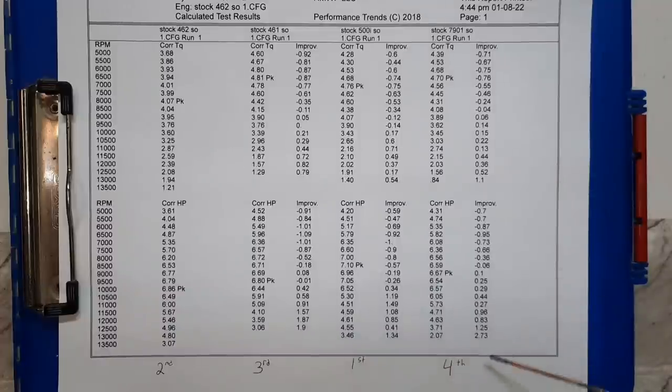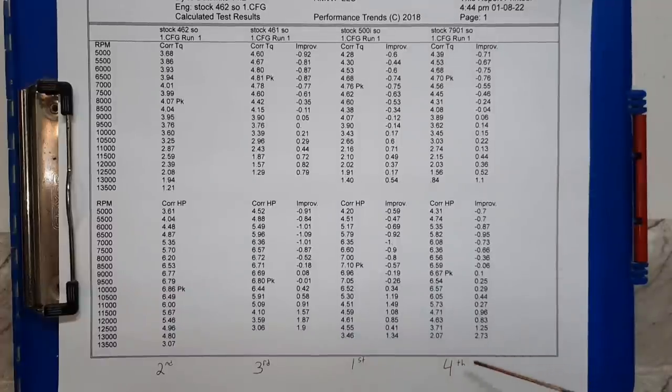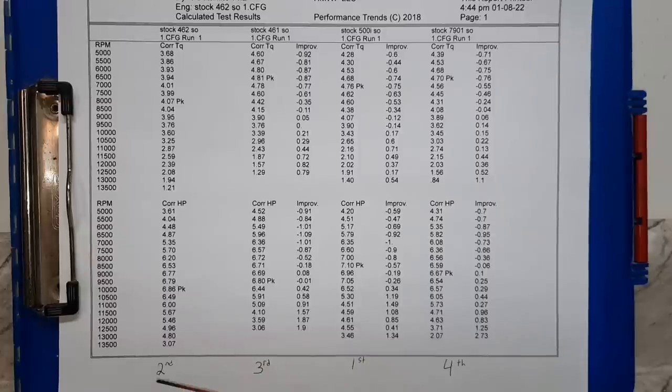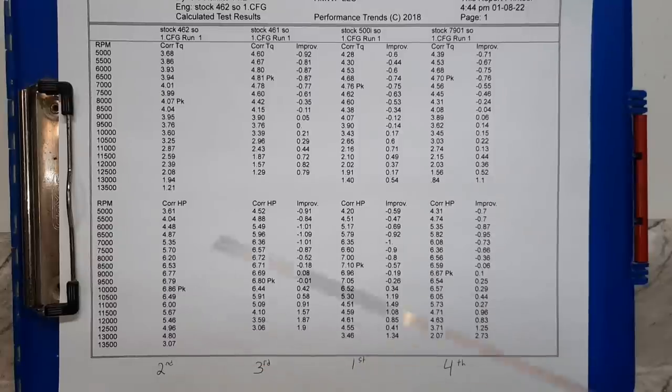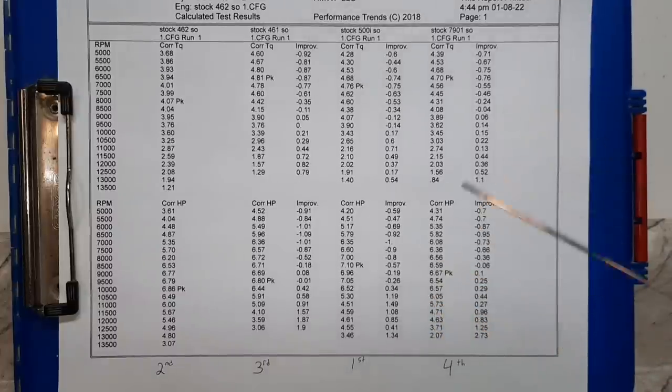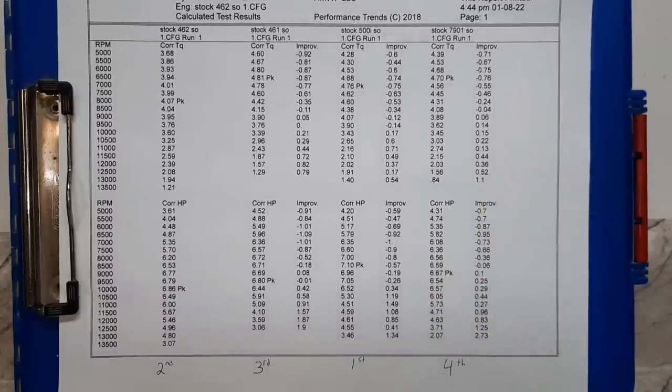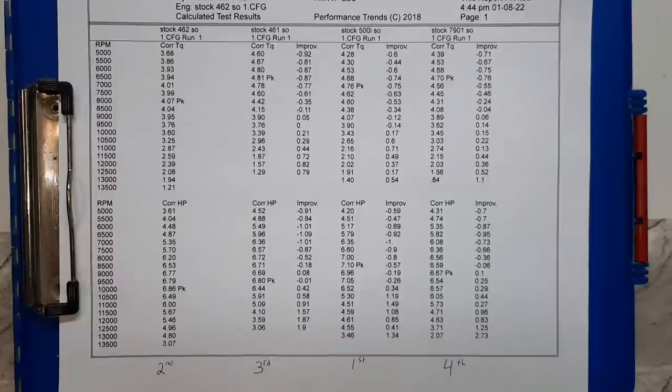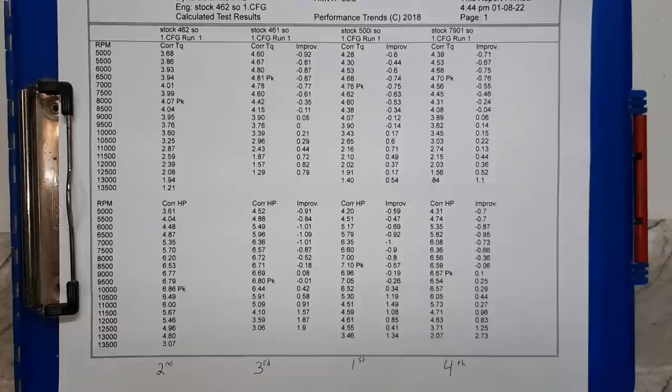Fourth most power, the Makita 7901. Then the Stihl 461 is third, the 462 second, and the 500i is first. The 500i and the Makita are both 78-79cc, so they're the high side of the 70cc class.